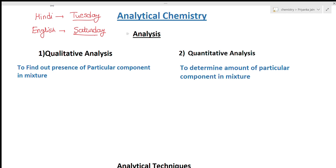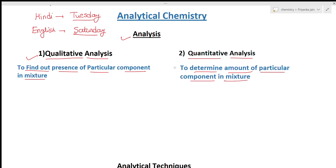Analytical chemistry is basically the analysis of a substance and the analysis can be done in two ways. First is qualitative analysis, which means we are given a mixture and we have to find out the presence of particular components in the mixture. The second is quantitative analysis, which means we have to determine the amount — the weight or volume — of particular components in the mixture.